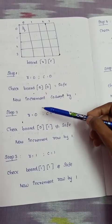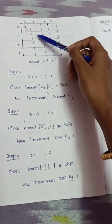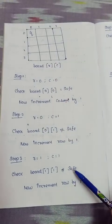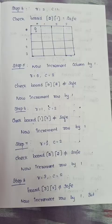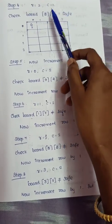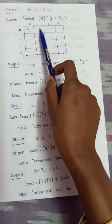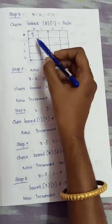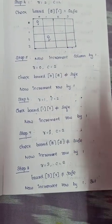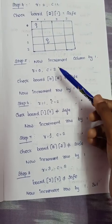If a position is not safe, we increment the row by 1. For example, row becomes 2, column value is 1. We check board[2][1] and verify row, column, and diagonal conditions. We then increment the column by 1 if needed.